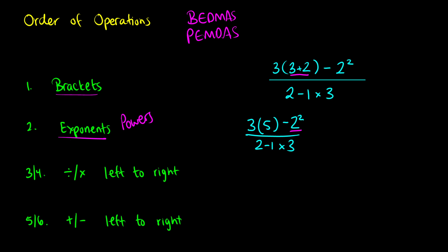At this point we're going to do 2 squared. So we have 3 times 5 — we leave that on its own — and we subtract 2 squared. Well, 2 squared is 2 times 2, which is 4. On the bottom we have 2 minus 1 times 3. The next thing is we do division and multiplication from left to right. So on the numerator and denominator, we do all multiplication and division. That means on our numerator we do 3 times 5 first, and on our denominator we do 1 times 3 first.